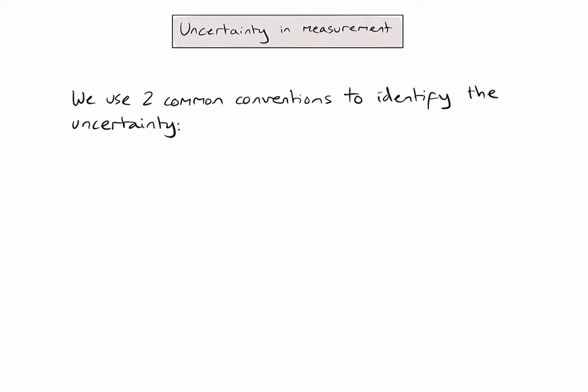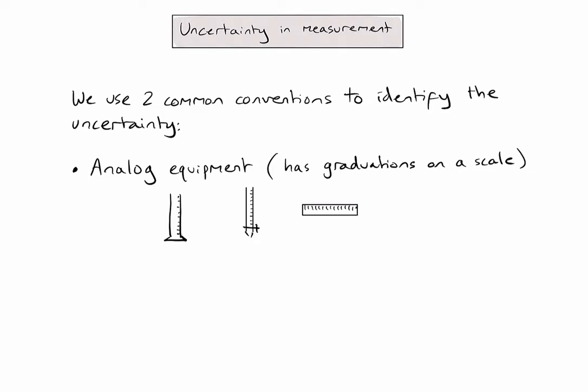The first type of equipment is analogue equipment. And this is equipment that has linear graduations or lines on a scale, which we use to make the measurement. Examples might include a graduated cylinder, a burette, a ruler or an analogue voltmetre.